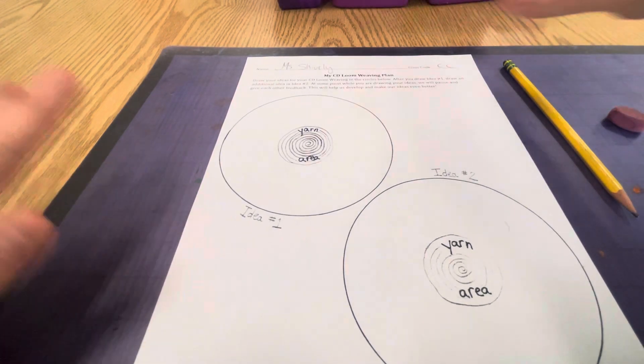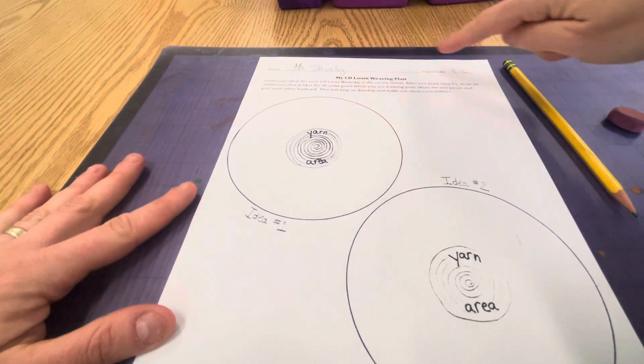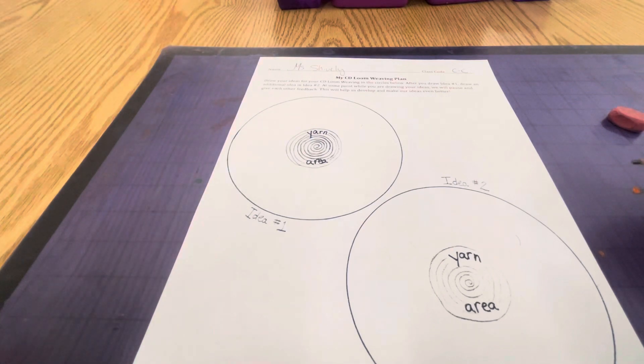Hello artists! Now that you've gotten your placemat, your CD loom weaving plan, and you've labeled it with your name and class code, you're ready to move on and start drawing your designs.